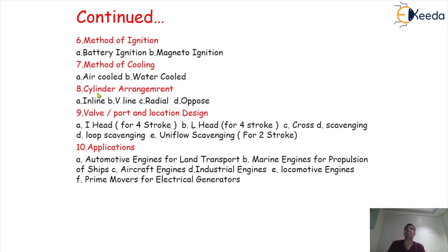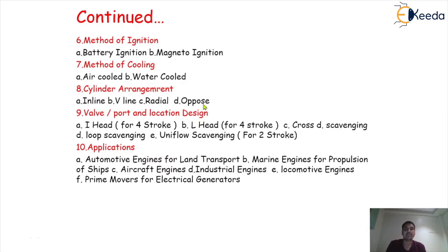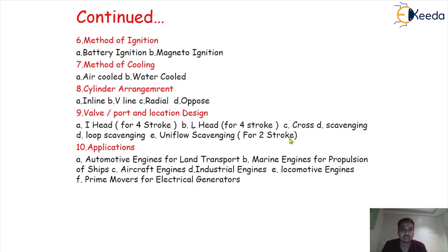The eighth classification is on the basis of cylinder arrangement. There is an inline engine, V-line engine, radial engine, and opposed engine — many types are present under cylinder arrangement. The ninth classification is valve or port and location design. It is again sub-classified as: I-head type, present for four-stroke engine; L-head type, also for four-stroke engine; cross-head type; scavenging type; loop scavenging; and uniflow scavenging — these all come under two-stroke engine. Generally, valves are present in the four-stroke engine and ports are present in the two-stroke engine.